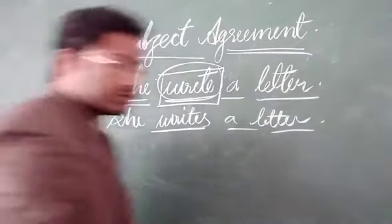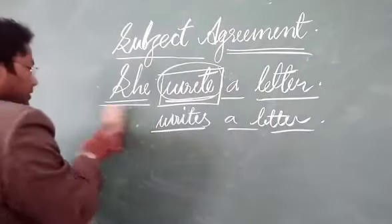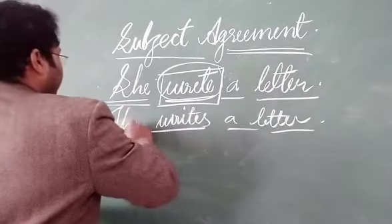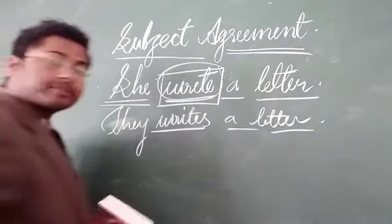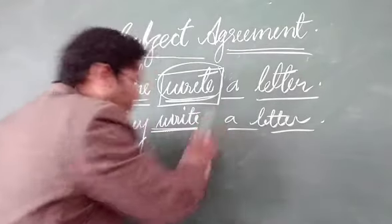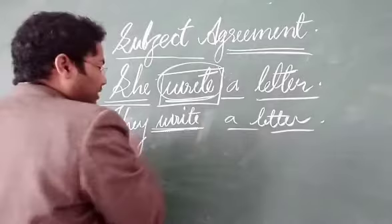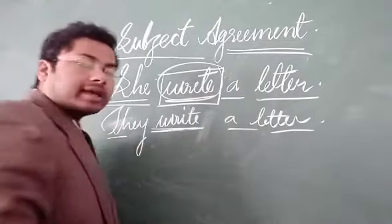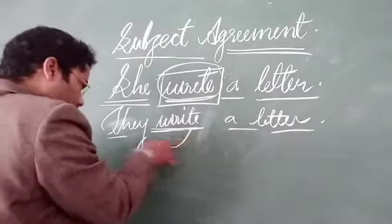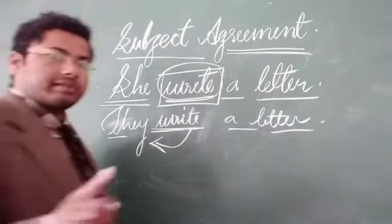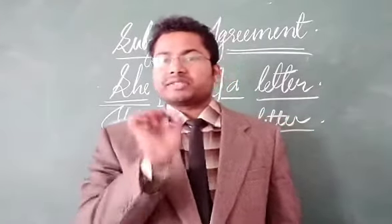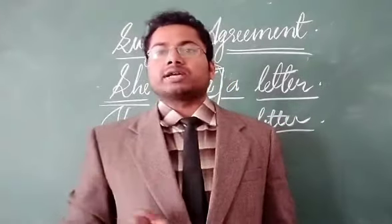When we change the subject of this sentence, if we write 'they' at the place of 'she' — they write a letter. We cannot write 'writes' for 'they.' 'Write' will be correct there. They write a letter. This is known as verb concord — subject agreement with its verb. I hope the meaning of subject agreement or verb concord is clear to everyone.